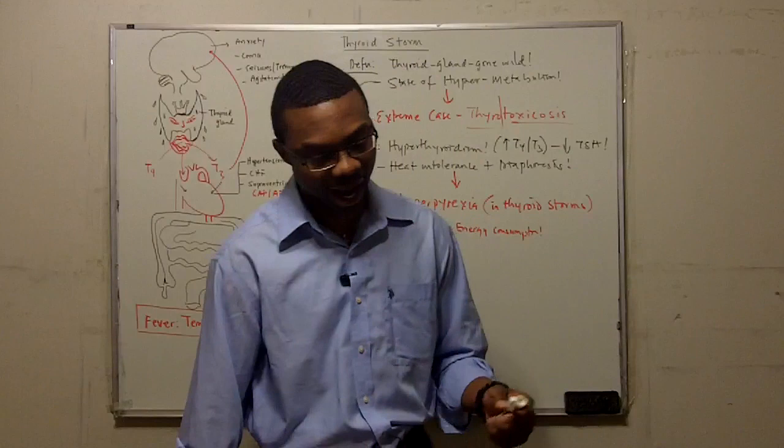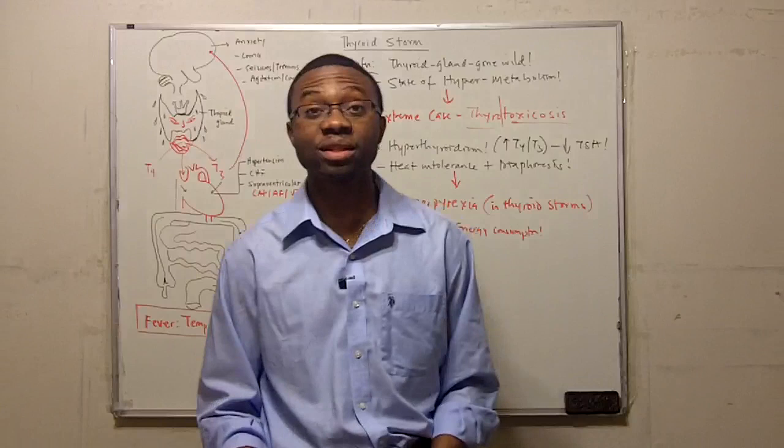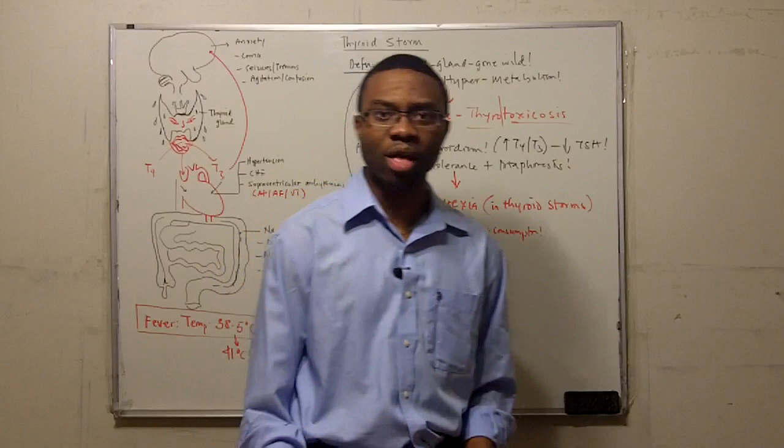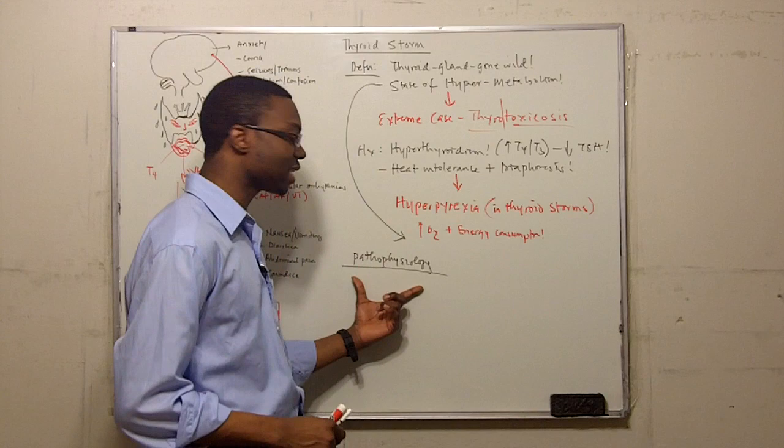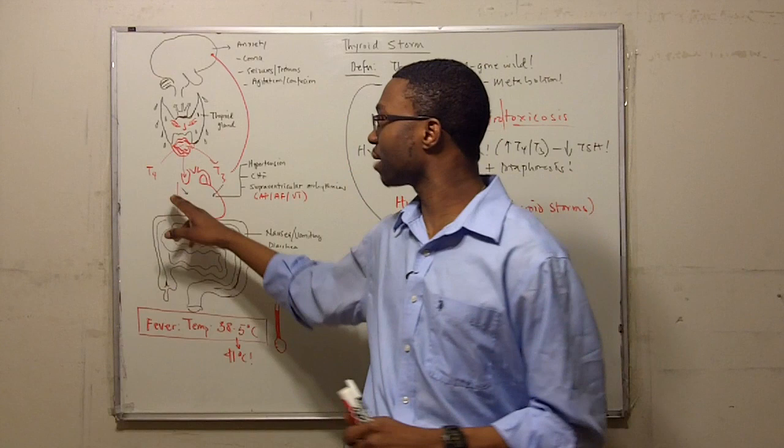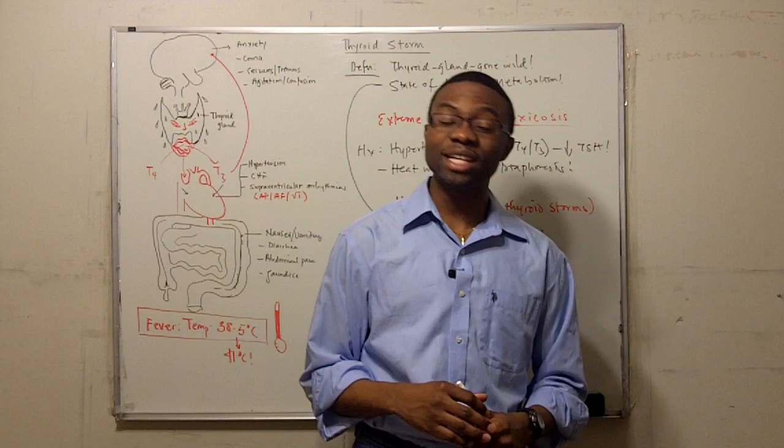Now, the pathophysiology of thyroid storm is actually not fully understood. Now, there's hypotheses and theories that explain what the pathophysiology really is. However, one proposed mechanism of thyroid storm pathophysiology is that these patients have elevated amount of thyroid hormone a lot more than people that have uncomplicated thyrotoxicosis. That's one proposed theory. We don't fully understand this.